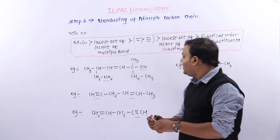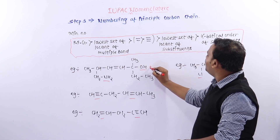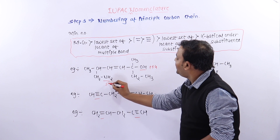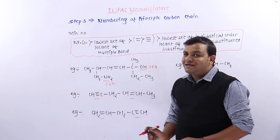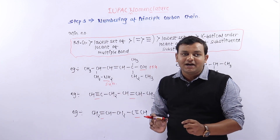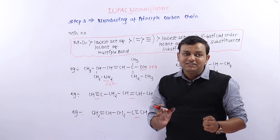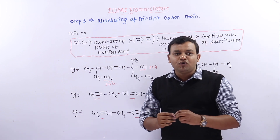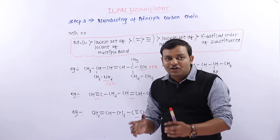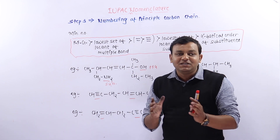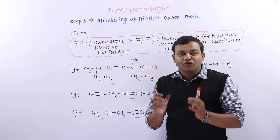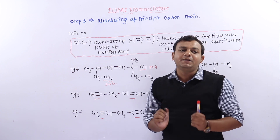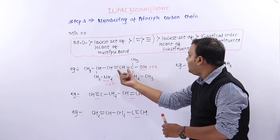तो alcohol हमारा principal functional group हो जाएगा। Second step: selection of principal carbon chain। Principal carbon chain selection — if my principal functional group carbon is covered, then cover it; multiple bond covered here.